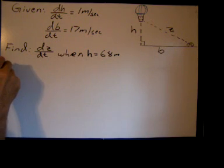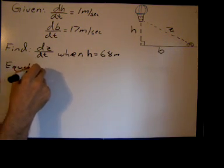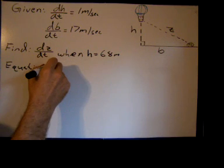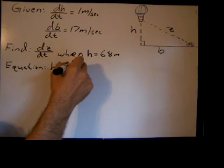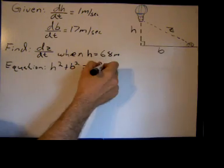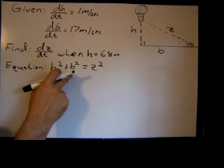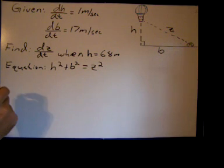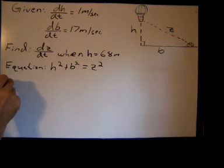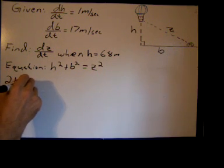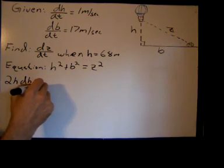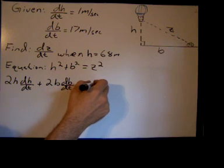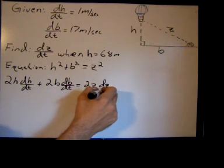So what's the equation we want to use? Well, everything's changing and we have a right triangle here. So I'm going to say H squared plus B squared equals Z squared. The sum of the legs squared of the right triangle equals the hypotenuse squared. So now we'll take the derivative of both sides with respect to t.